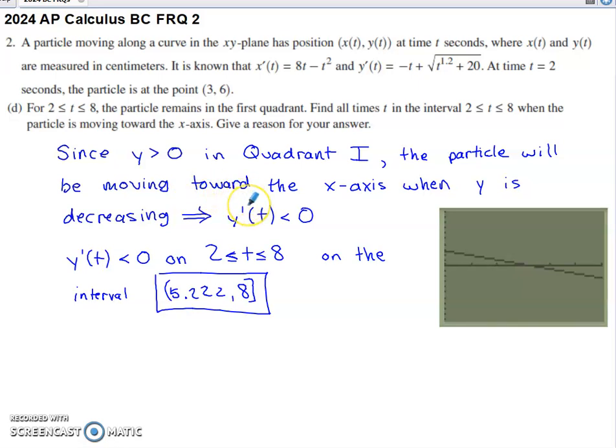Y is going to be decreasing when the rate of change of y, the y component of velocity, is negative. This is a graph of y'(t) on the interval 2 to 8. And what you'll notice is you'll notice that it's positive